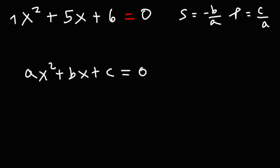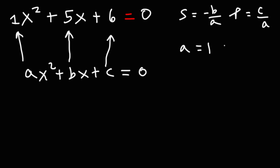For our first example, a is the number in front of x squared, b is the number in front of x, and c is the constant. So a is 1, b is 5, and c is 6.